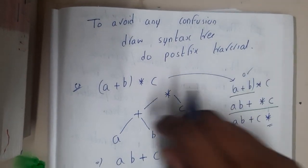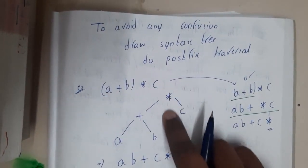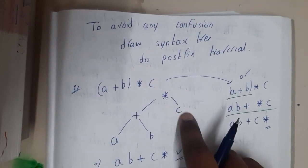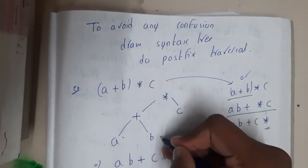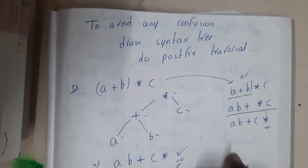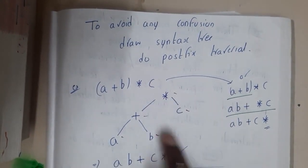A plus b into c is nothing but a plus b will be the first calculation, and with this you'll be multiplying c. So if you do postfix, initially a b plus c star. That is what we got.